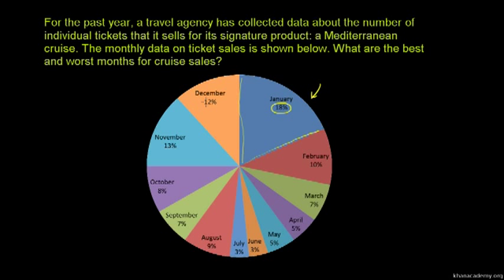So you can add up the numbers — finally, you can add up to 100%. This slice of pie is 18% and this area of the pie chart is 18%.